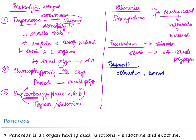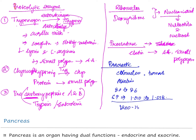The alkaline nature is due to bicarbonate synthesized from the ductal cells. The pH is around 8 to 8.6, and it has a specific gravity of around 1.010 to 1.018. It is secreted at around 1,200 to 1,500 mL per day and is isotonic with plasma.